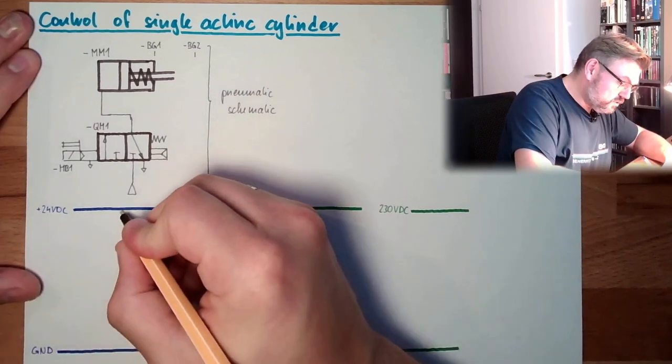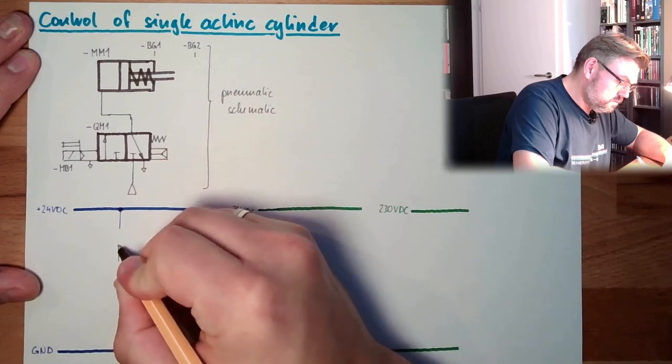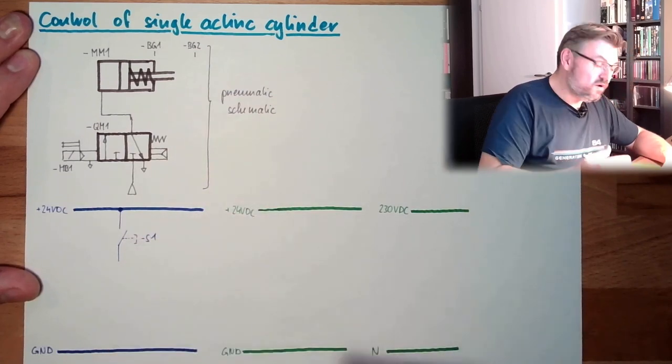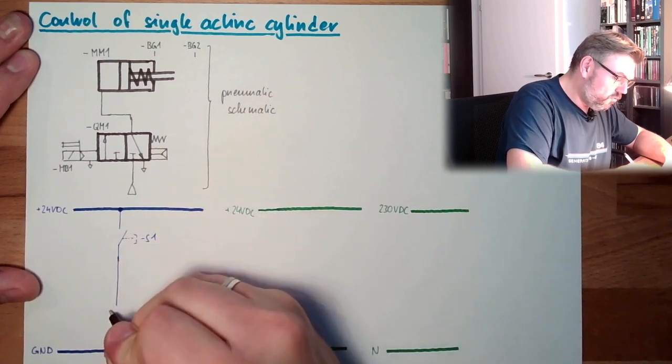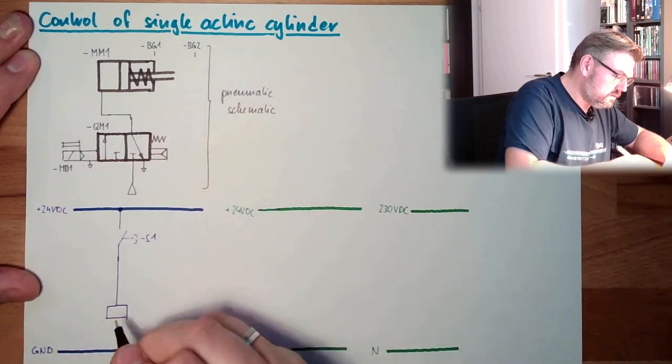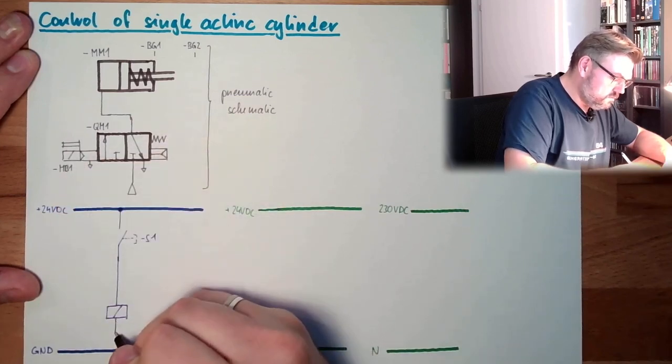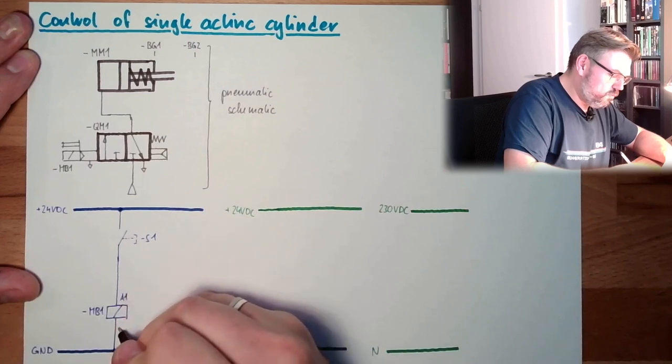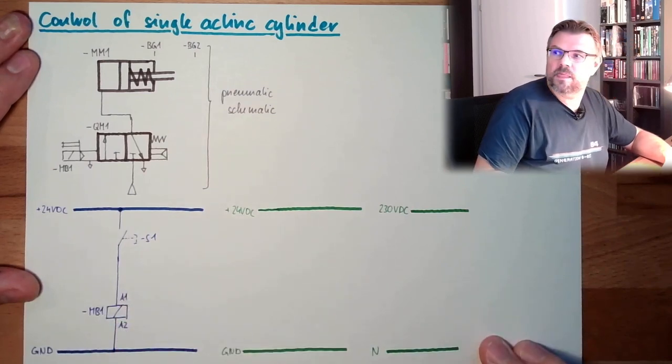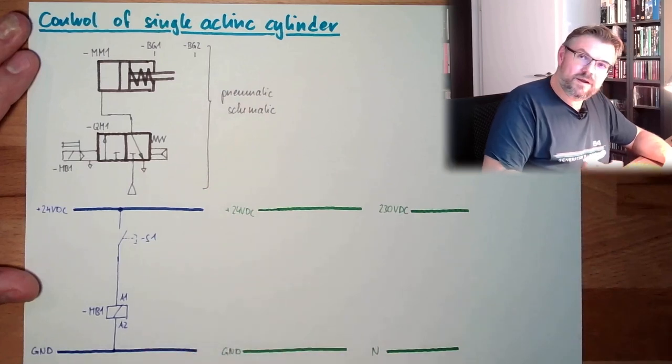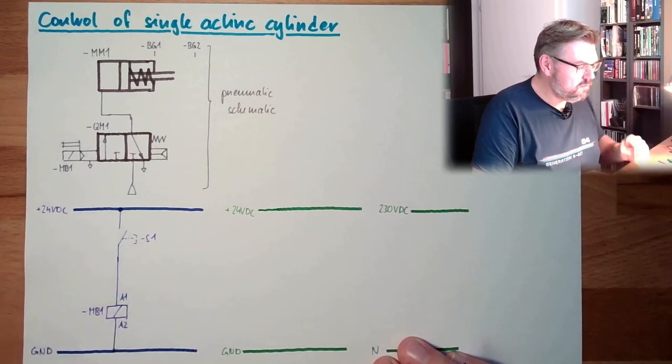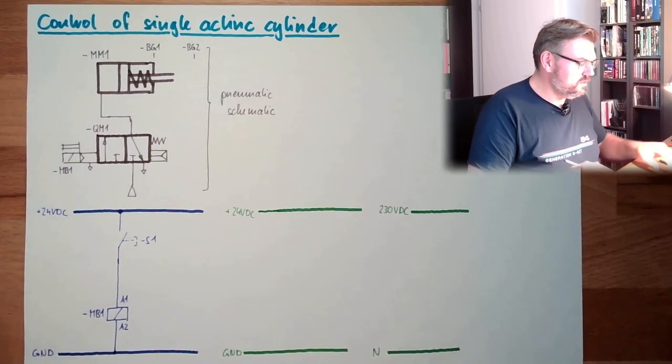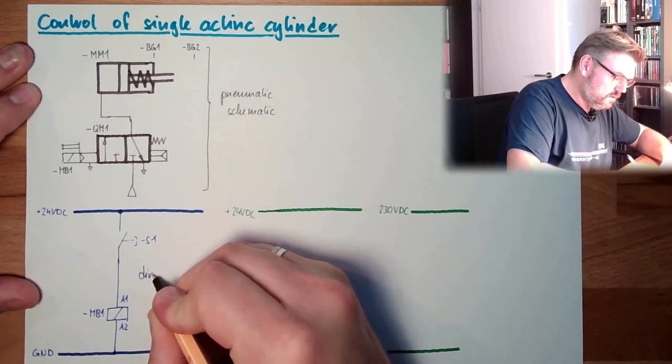What we need? We need some sort of switch. S1, I will call it. And if we control it directly, we are directly controlling this. We have to name it the same way. This is connection A1 and A2. This is already it. This might be an electrical control scheme. If I press the button, this will have power, this will switch, it will travel. So this is direct control.